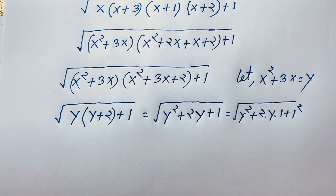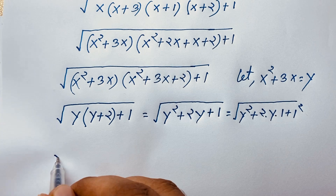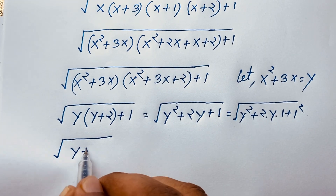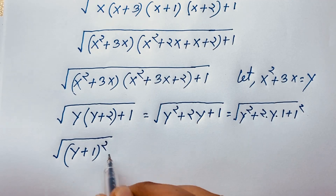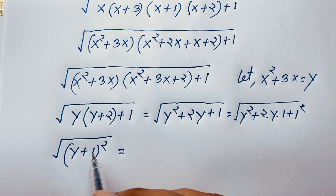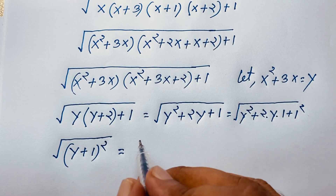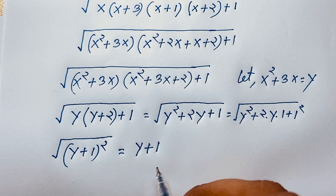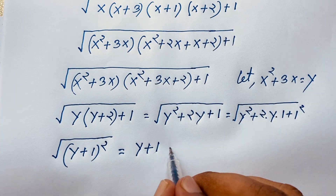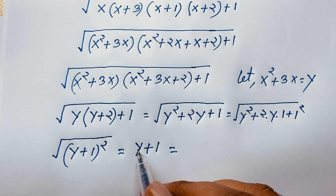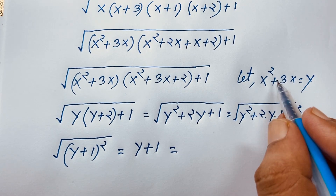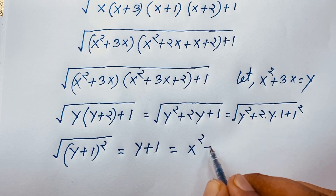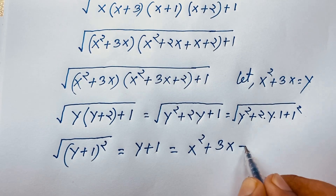Applying this formula, the square root of (y+1) squared simply gives us y+1. Now recalling that y equals x squared plus 3x, substituting back gives us x squared plus 3x plus 1.